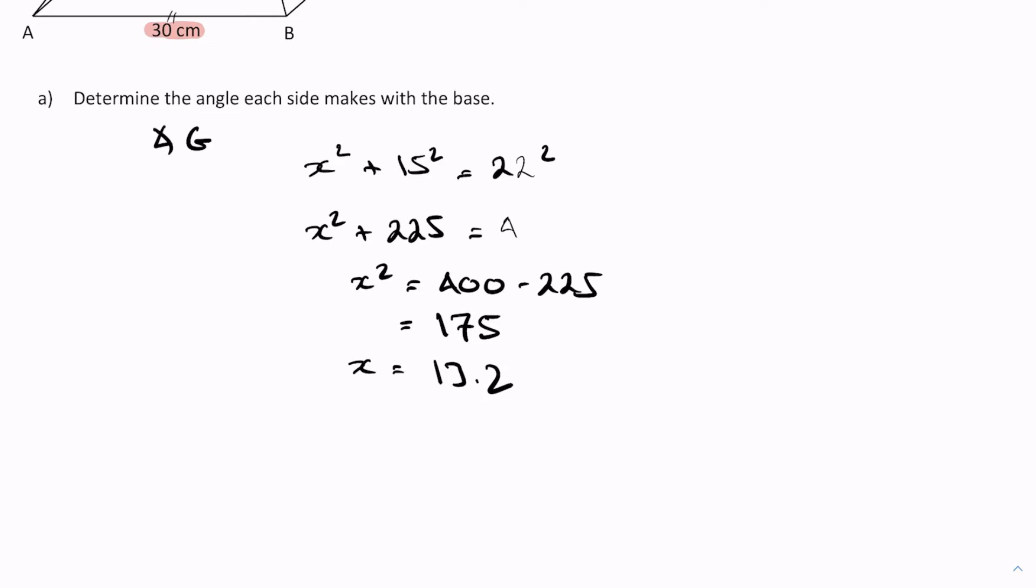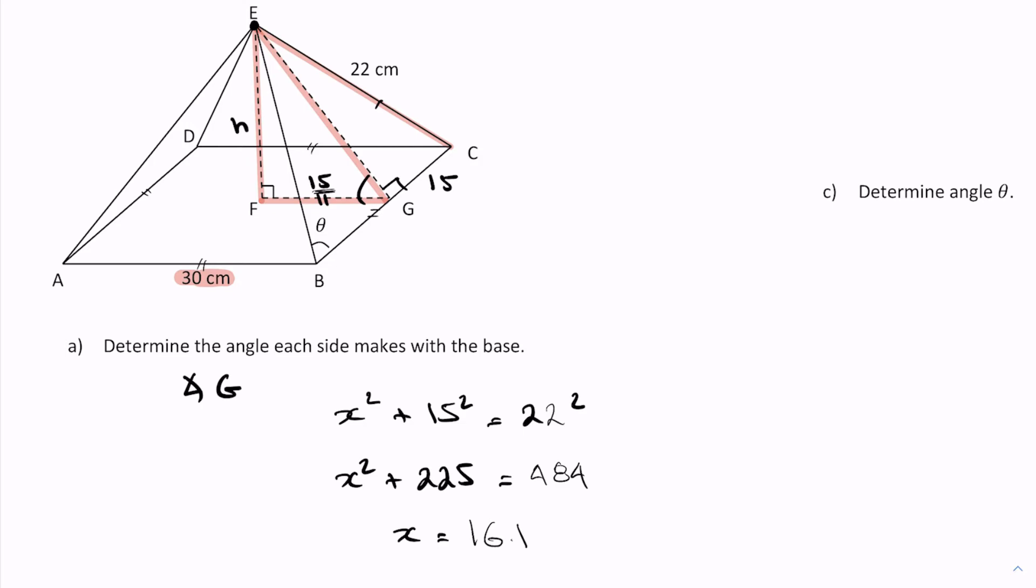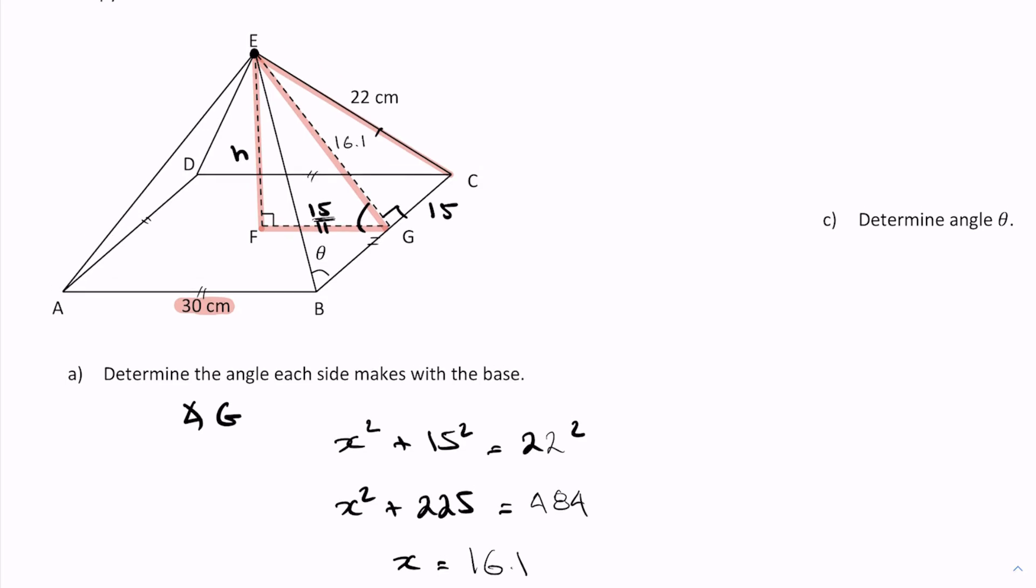All I have to do is replace the 20 with a 22. 22 squared is 484. I'm going to skip all the other steps. I get an X value of square root of 484 minus 225, which is 16.1. That is our side or our hypotenuse, and that is greater than 15, so we can go on and solve for angle G.